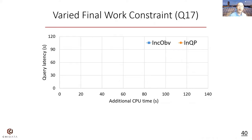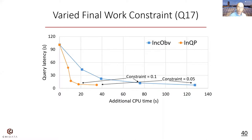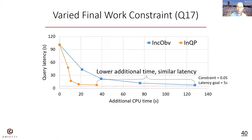We also report how NQP works under various final work constraints, showing additional CPU time on the x-axis and query latency on the y-axis. We start with constraint 1 (batch processing) and gradually decrease the final work constraint. For all constraints, NQP achieves similar latency but much lower CPU consumption compared to the baseline. For example, at constraint 0.05 with a latency goal of 5 seconds, both approaches are close to the latency goal but NQP has much lower CPU consumption.